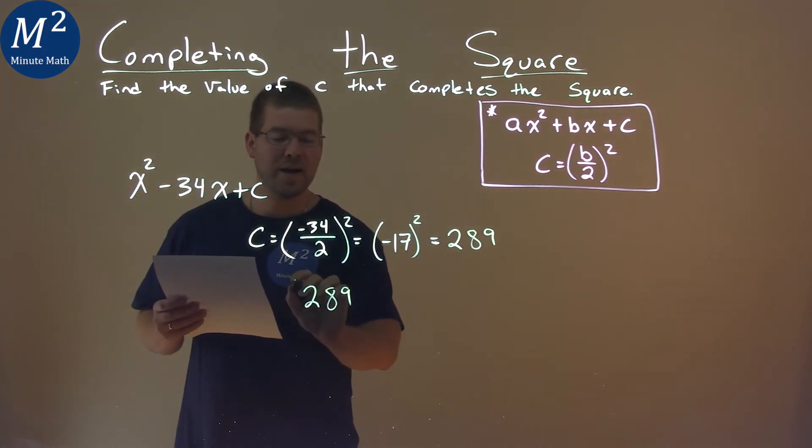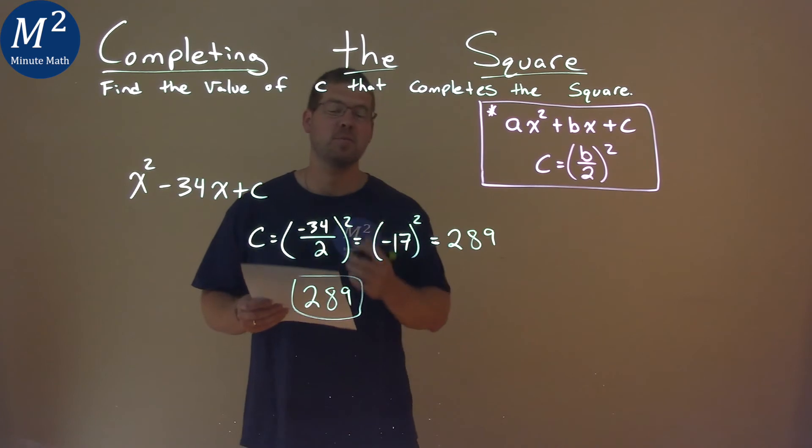So 289 is the c value that completes the square.